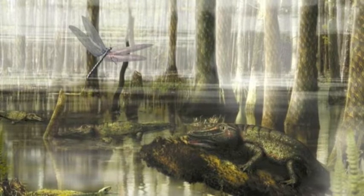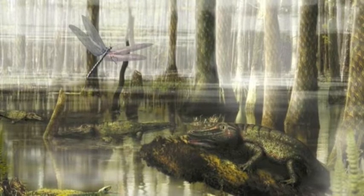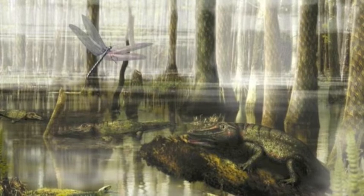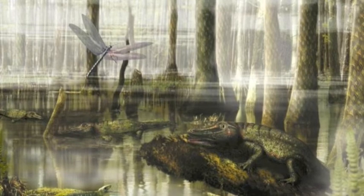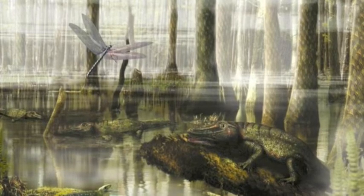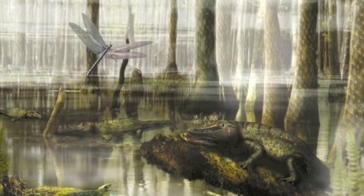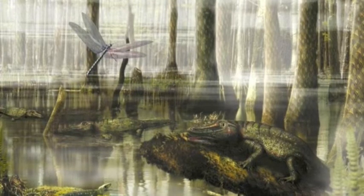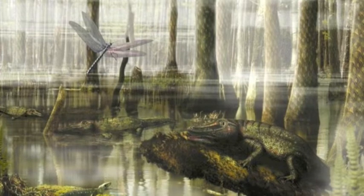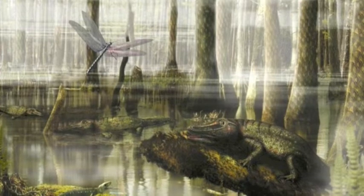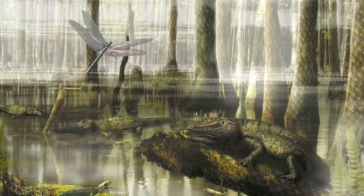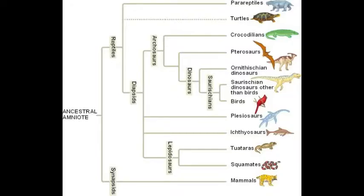It is theorized that amniotes diverged from an amphibian ancestor during the Carboniferous period, roughly 300 million years ago. Our current understanding of the evolutionary origins of amniotes is that there was a divergence between the synapsids and the sauropsids, meaning lizard faces.